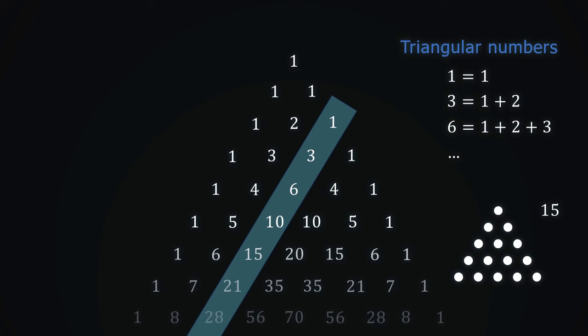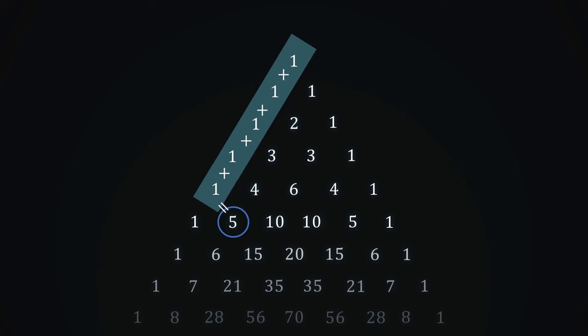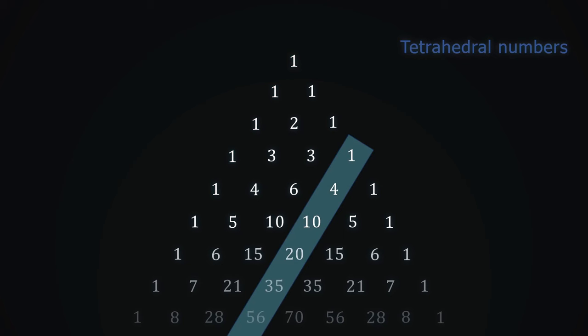In Pascal's triangle, we can see this visually in the following way. The indicated number is equal to the sum of all the numbers in the previous diagonal up to the row before it. This is technically true for the previous diagonal as well, because for example, there are 5 ones before the number 5. Let's move on to the third diagonal to assure ourselves that this rule is still correct.